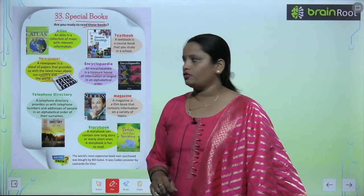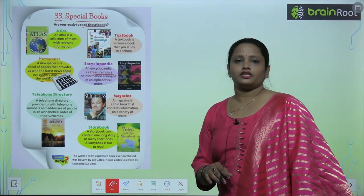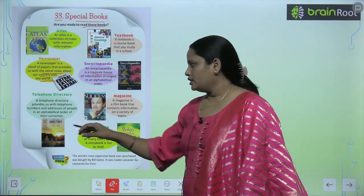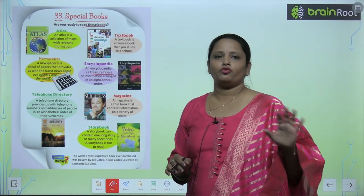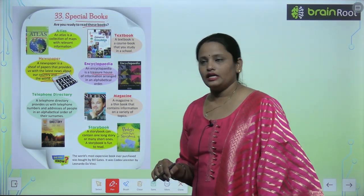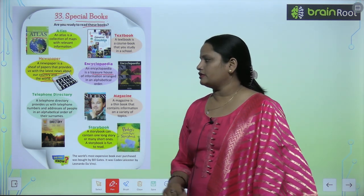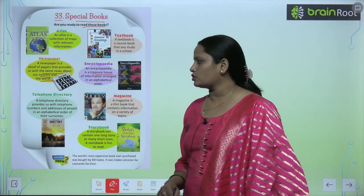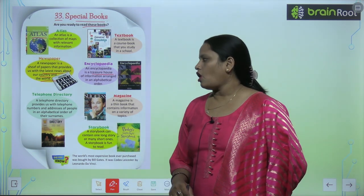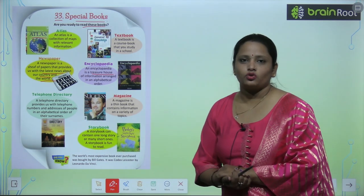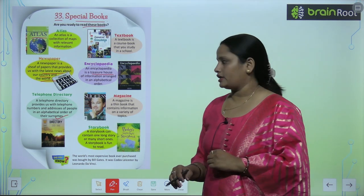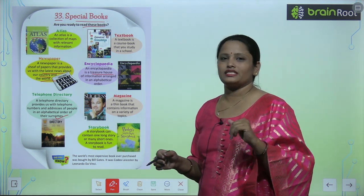Next comes the telephone directory. Children, jab internet nahi hota tha toh telephone directory hoti thi, jismein jitne bhi phone numbers hain woh kisi bhi corner ke ho sakte hain — woh saare phone numbers aapko telephone directory mein milte the. A telephone directory provides us with telephone numbers and the addresses of people in alphabetical order of their surnames, so jiska surname A se shuru hai woh pahle aayega aur jiska Z se woh baad mein.